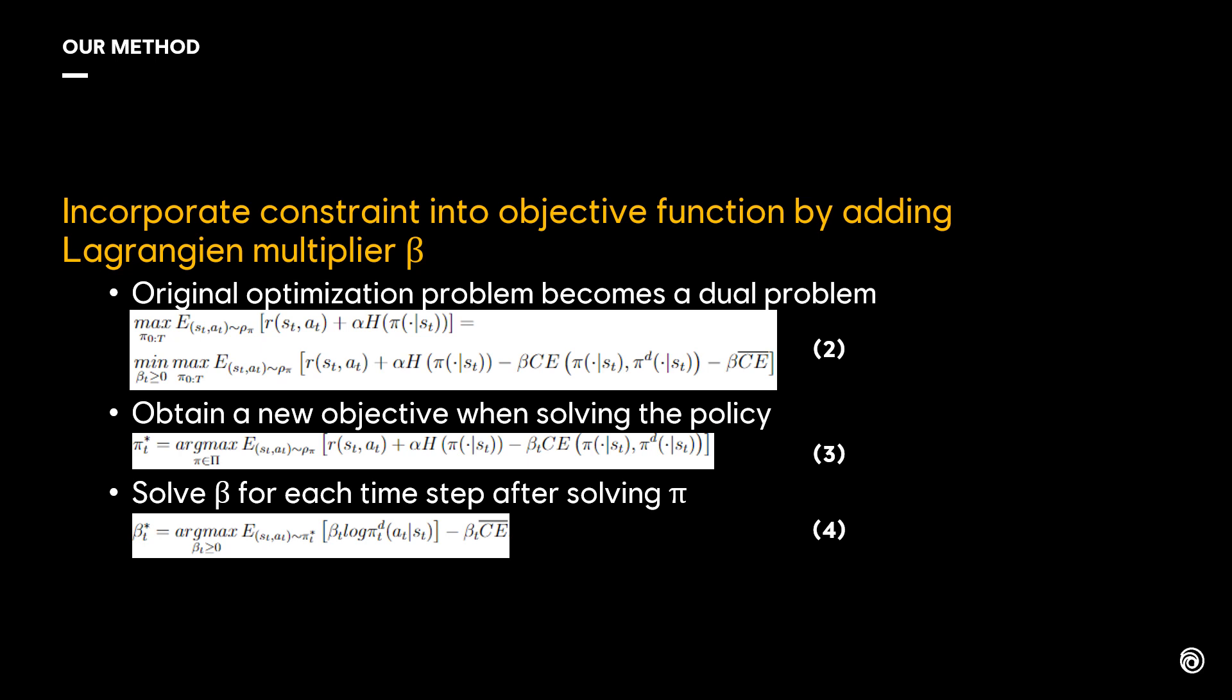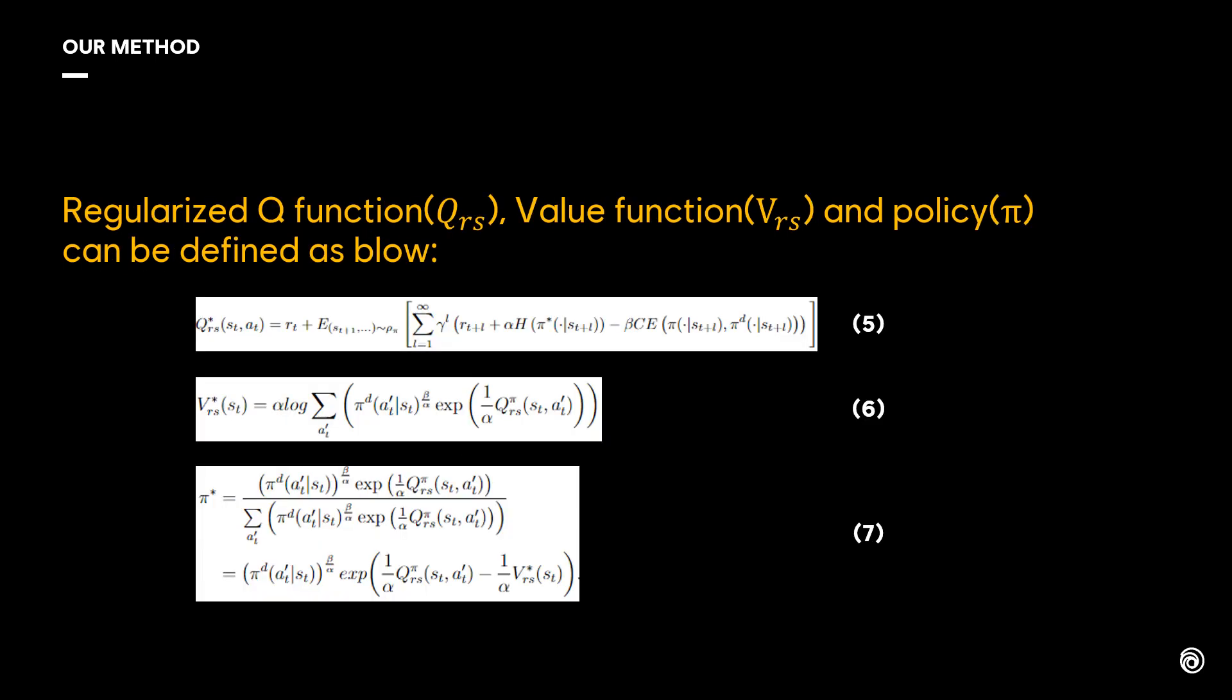For each time step, after solving the policy, we can solve the beta with equation 4. Then, we can define the regularized Q function, regularized value function, and the policy, showing below, from equation 5 to 7.